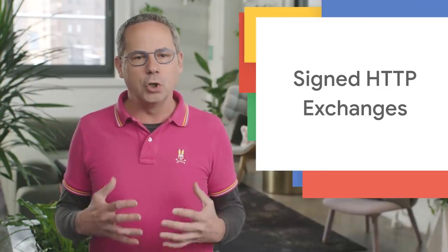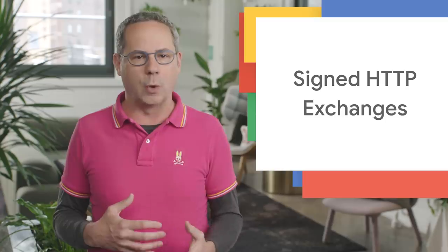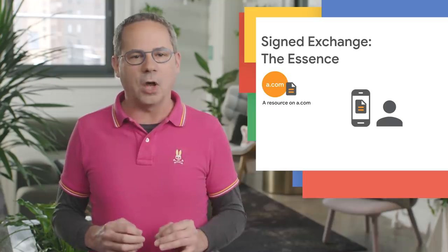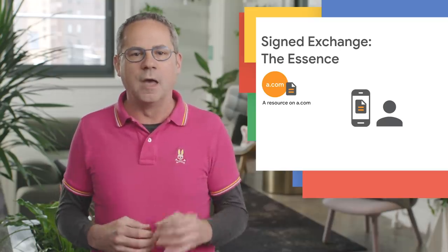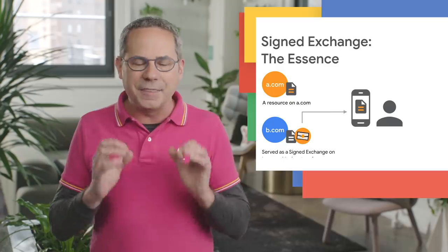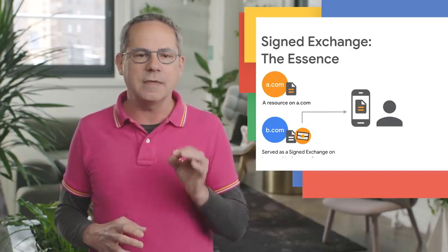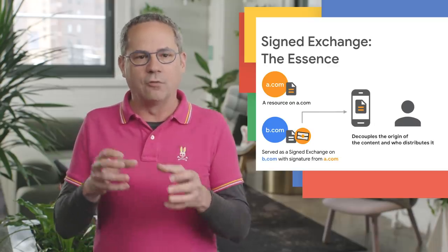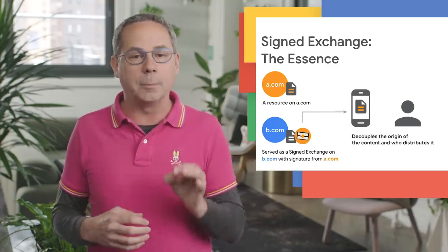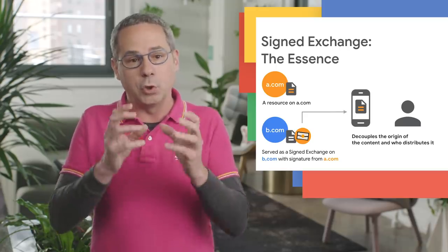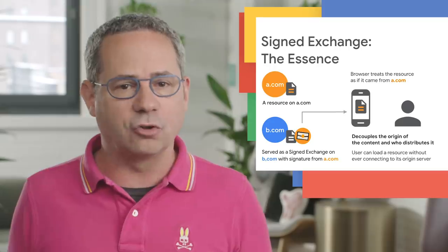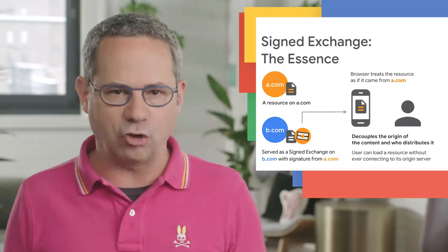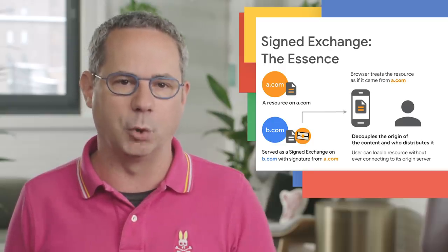Signed HTTP exchanges, part of a new emerging technology called Web Packages, is now available in Chrome 73. A signed HTTP exchange makes it possible to create portable content that can be delivered by other parties, but retain the integrity and attribution of the original site. This decouples the origin of the content from the server that delivers it, but because it's signed, it's like it's being delivered from your server. When the browser loads this signed exchange, it can safely show your URL in the address bar, because the signature in the exchange indicates the content originally came from your origin.